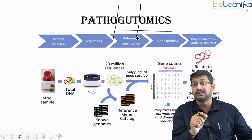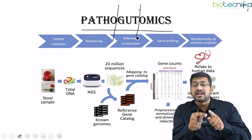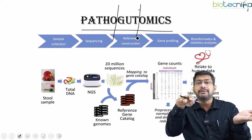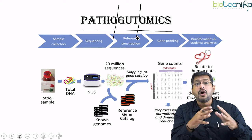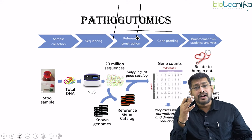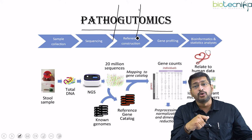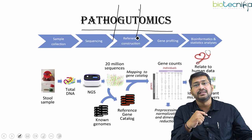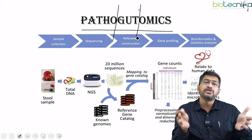An important point: even if someone is suffering from a disease, certain microorganisms are responsible for it, and reversing the disease by reducing bad bacteria and increasing good bacteria is also possible through prebiotics and probiotics. All of this put together is called pathogutomics. Our group was the first to term this as pathogutomics or synthetic gutomics, and this has been published in the journal Methods in Microbiology published by LCVIA. The entire consortium is very important — it is an amalgamation of pure sciences, applied sciences, and allied sciences, leading to the generation of new terminologies.